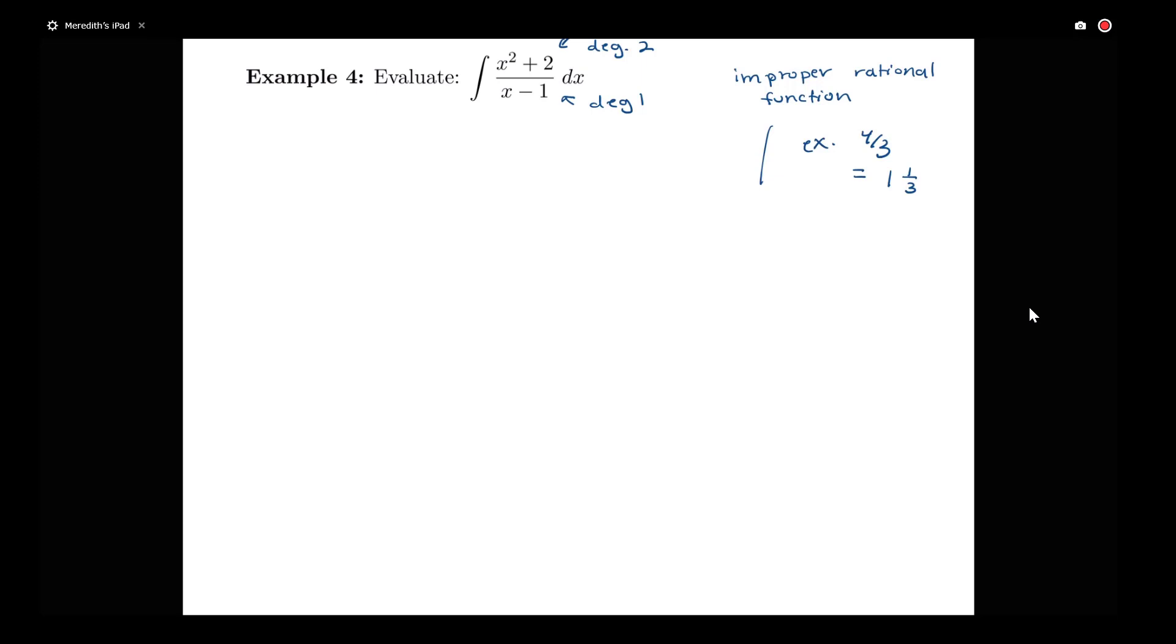The trick we're going to apply here is to take this improper rational function where I have this higher degree term in the numerator and a smaller degree term in the denominator, and use long division. So we're going to see the technique of using long division to simplify an improper rational function.